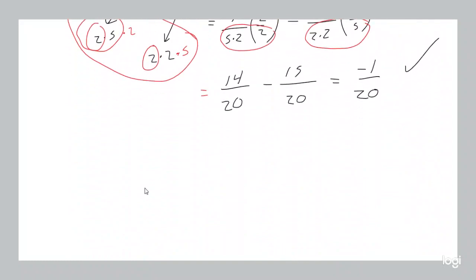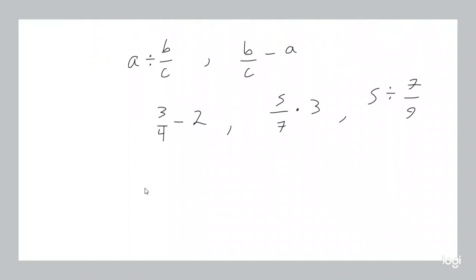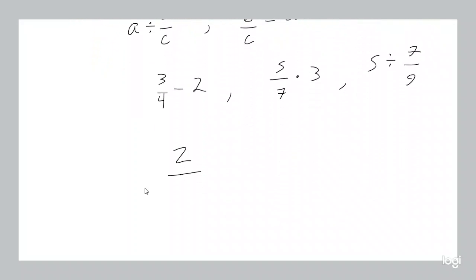I'll teach you one more trick. What if you're subtracting or adding numbers, but one of them is a fraction and the other one isn't? Like three quarters minus two, or five sevenths times three, or five divided by seven over nine. What if one of your numbers is a fraction and the other one isn't? No worries — any number is a fraction, it's just divided by one, because any number divided by one is itself.